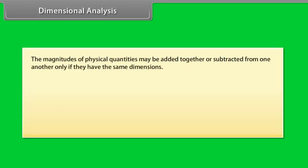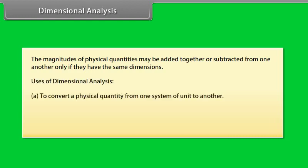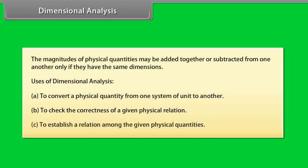Dimensional analysis. The magnitudes of physical quantities may be added together or subtracted from one another only if they have the same dimensions. Uses of dimensional analysis: to convert a physical quantity from one system of unit to another, to check the correctness of a given physical relation, and to establish a relation among the given physical quantities.